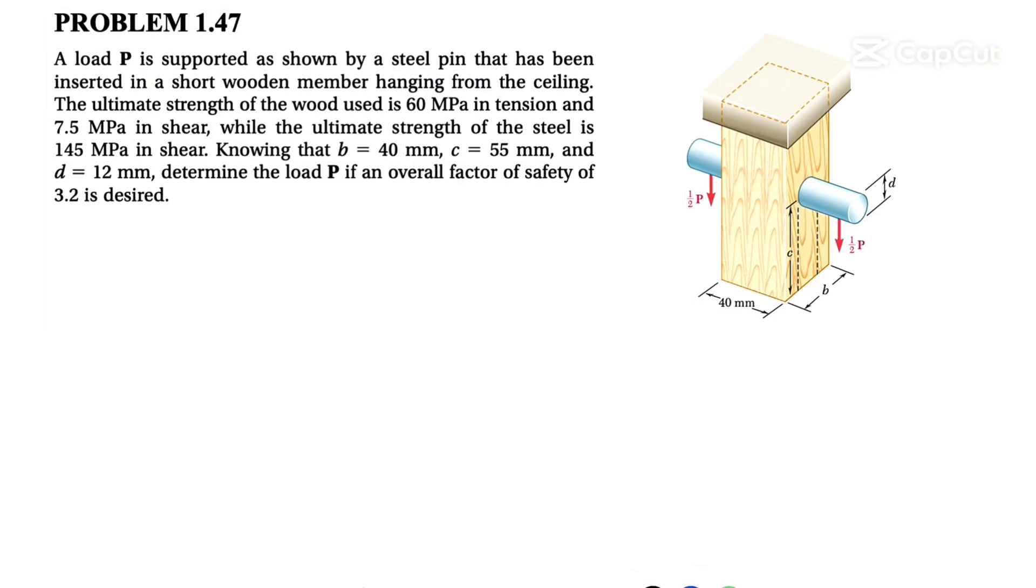Alright guys, welcome back. We're going to be solving question 1.47 from the first chapter of the Beer and Johnson textbook Mechanics and Materials. We have a load P that is supported by a steel pin that has been inserted in a short wooden member hanging from the ceiling.